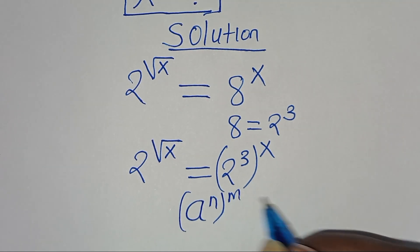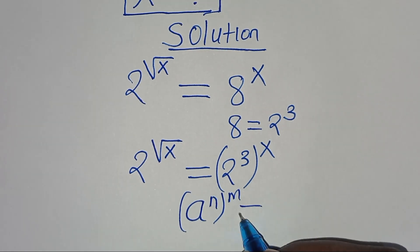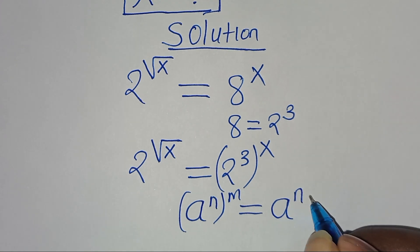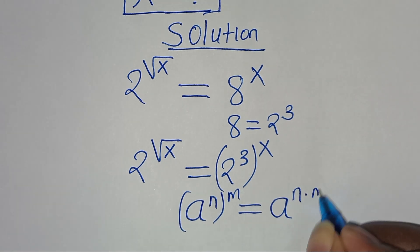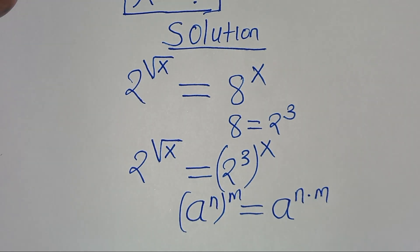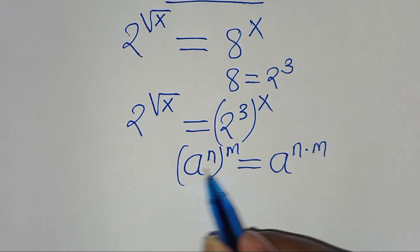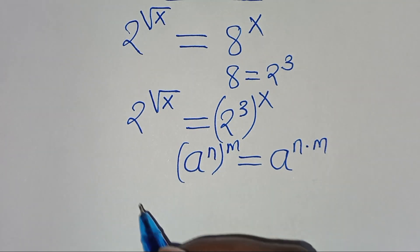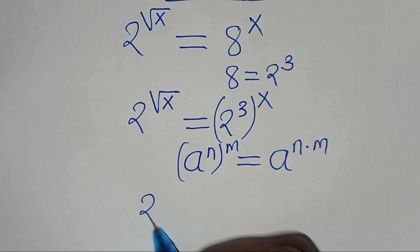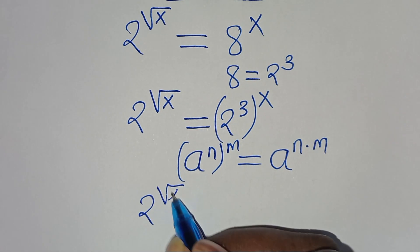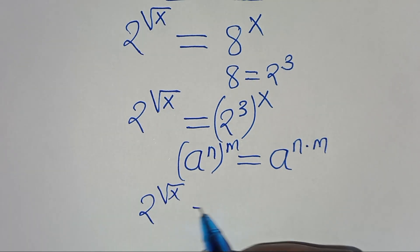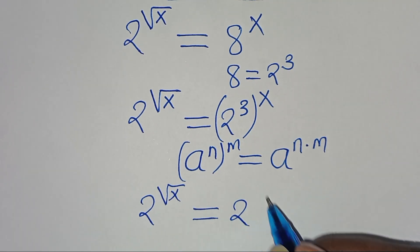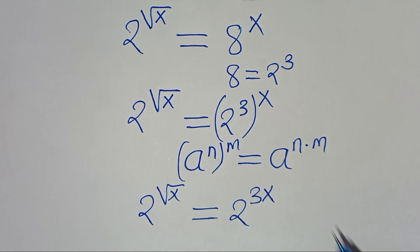This is in the form a to the power of n raised to the power of m, which we can express as a to the power of n times m. Applying this exponent property, we have 2 to the power of square root of x, this is equal to 2 to the power of 3x.